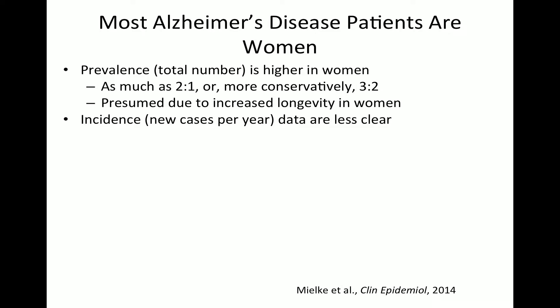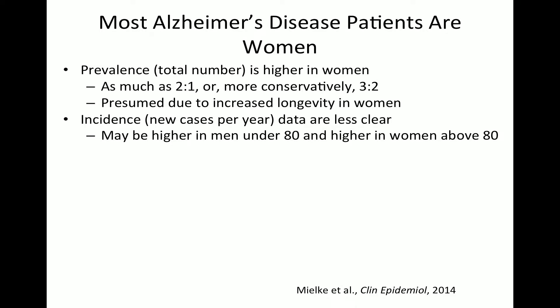To look at this, you can examine incidence — the number of new cases per year in a given age range. The data here are less clear than the prevalence data. In a large review by the group at Mayo, men actually appear to have higher incidence of developing Alzheimer's in a younger age group, under 80. When you get over 80, even controlling for longevity, incidence looks higher in women — and this biology is probably more Alzheimer's-specific.